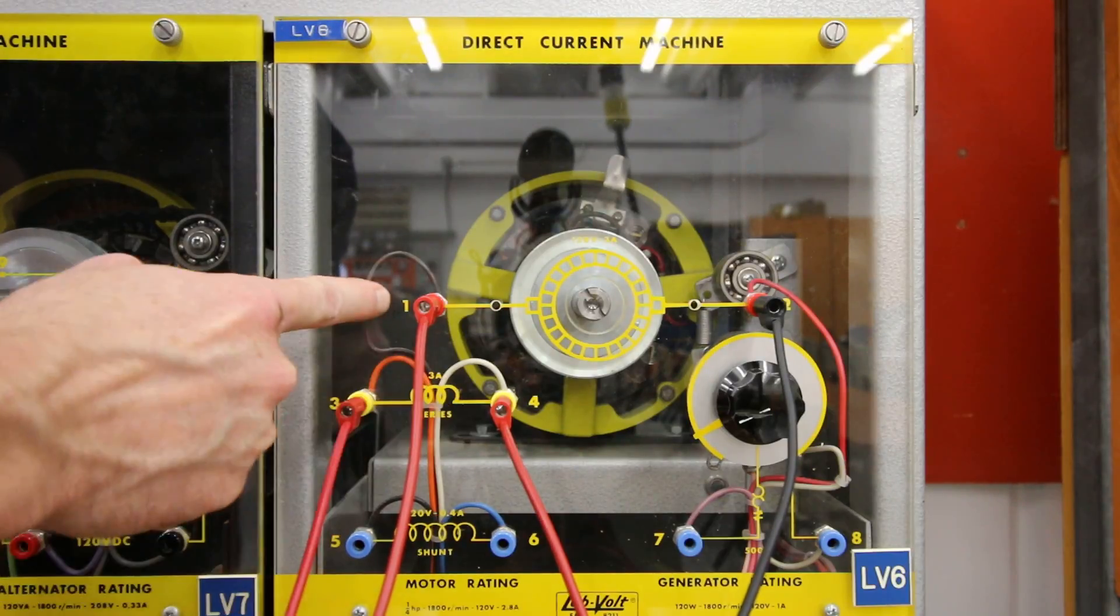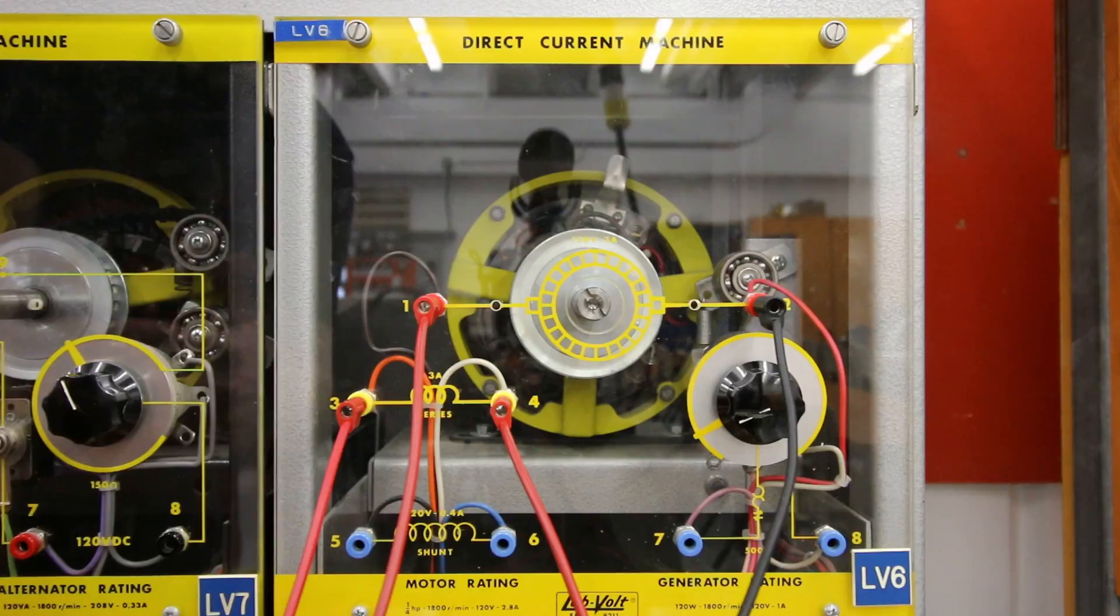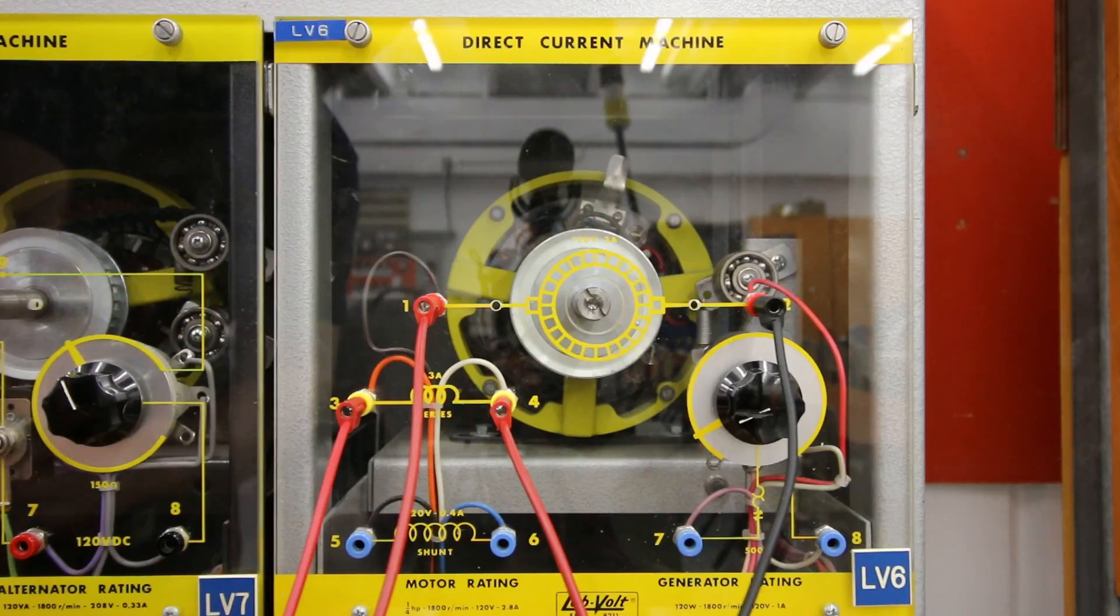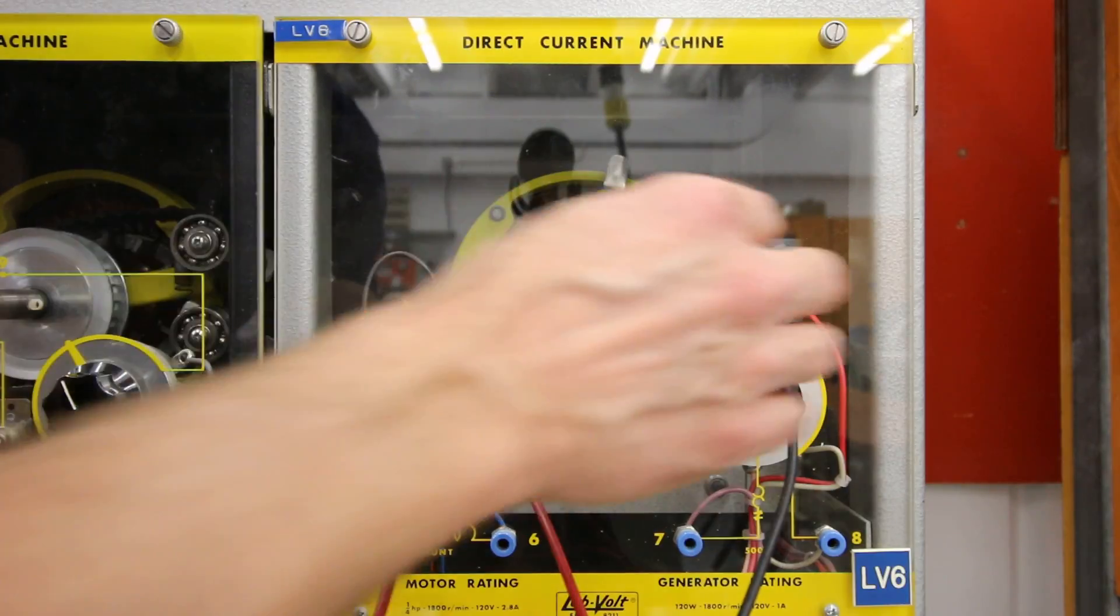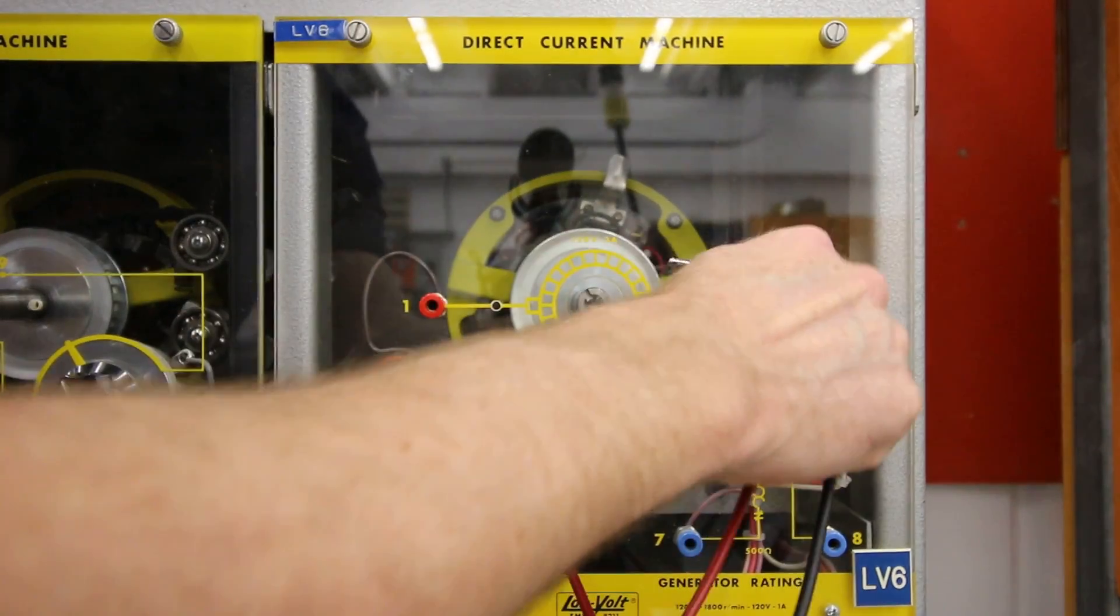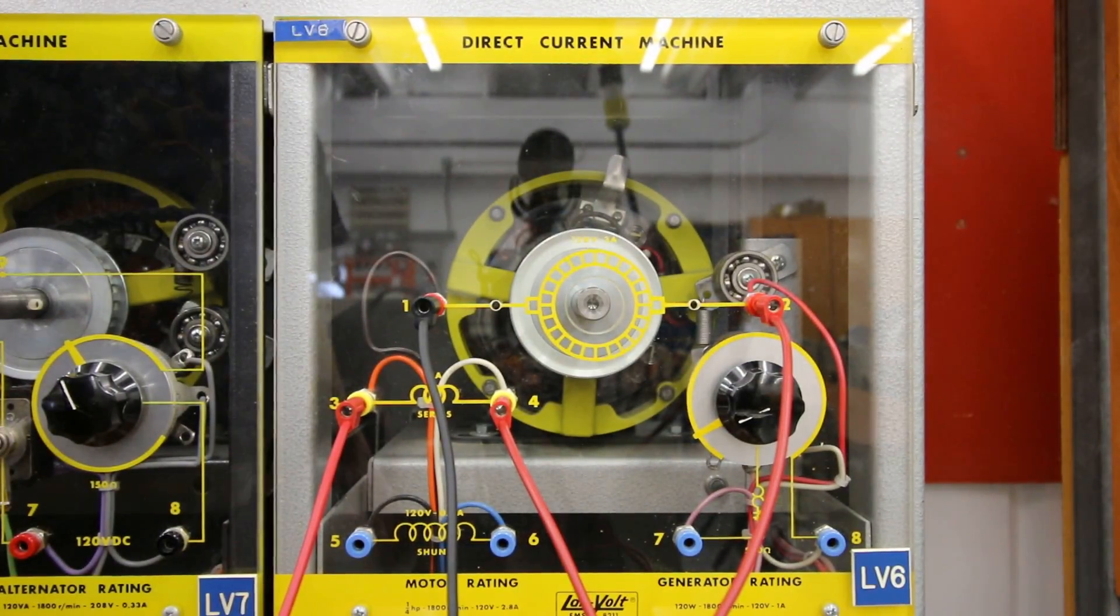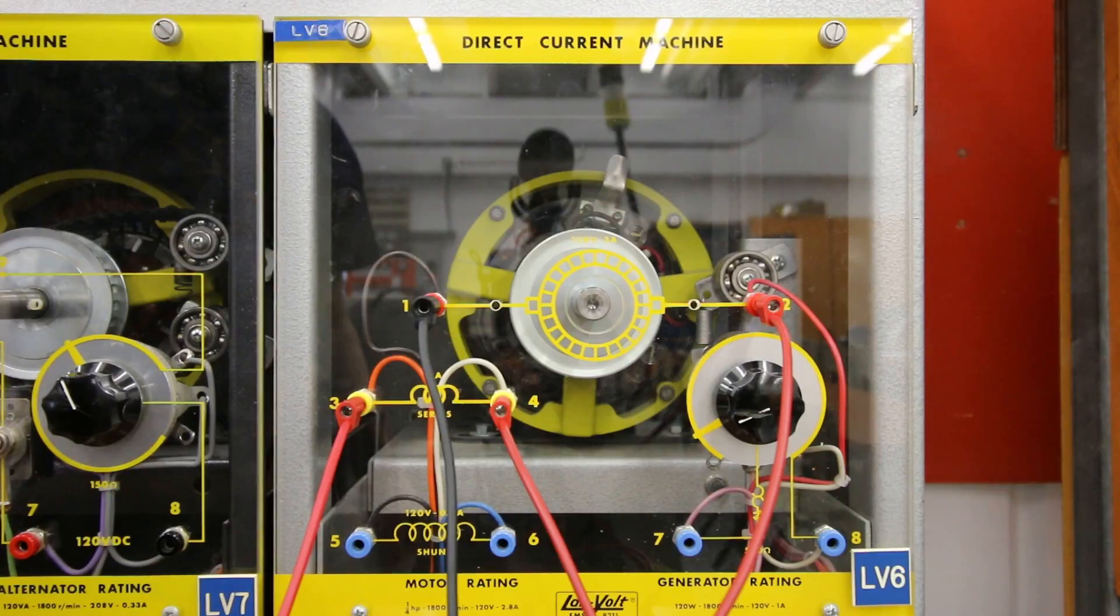Because we don't know which one is S1, S2, A1, A2, we're just arbitrarily making connections and seeing which way it spins. This one is going in a clockwise direction. If I want to get this motor to go in the opposite direction, I can simply just change my A1 and A2.